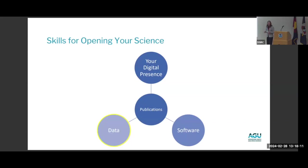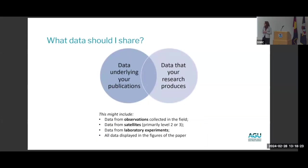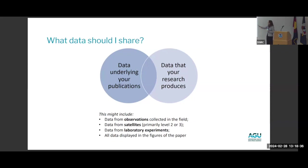That's digital presence. Now I want to talk about data — one of the key elements of any researcher's career. A question we get a lot is: what does it mean to have open data? What kind of data should I be sharing? This depends on the domain, but in general we start with the data underlying your publications. You can also share any data your research produces — and this is truly open. You don't have to have published on it.